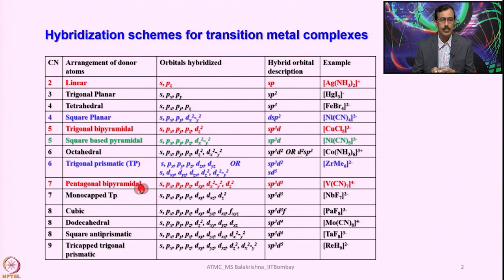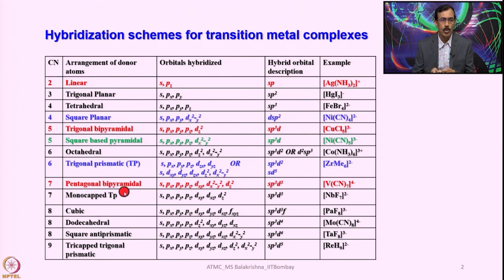For pentagonal bipyramidal with coordination number 7, since we need 7 orbitals, we use one additional D orbital: DXY, DX²-Y², and DZ² along with S and 3P orbitals — giving SP3D3 hybridization. When coordination number is 7, another possible geometry is mono-capped octahedral, which also uses SP3D3 but with different specific orbitals.